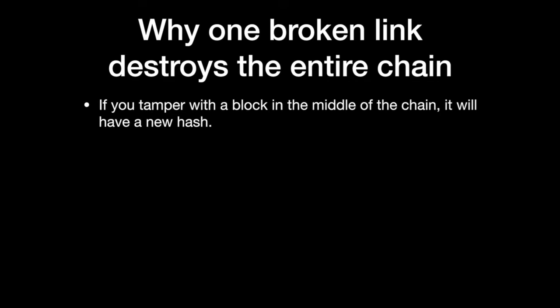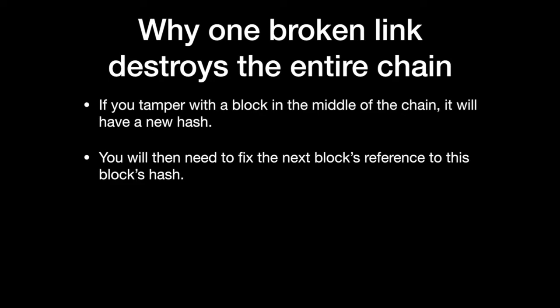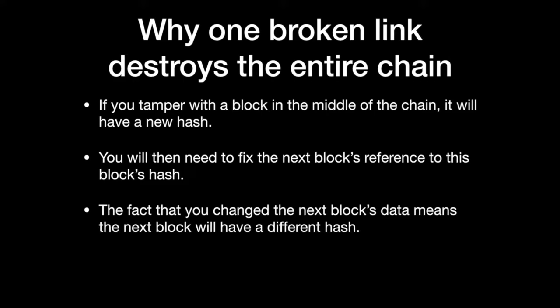So how does blockchain work like a chain? Say a hacker tampers with a block, called block A, which is in the middle of the chain. This means the hacker changes the data stored in block A. When that data is changed, it causes block A's hash value to change. This means that block B, which is the block that follows block A, no longer has a hash code that refers correctly to block A. So in order to keep the blockchain a chain, the hacker must also fix the hash code that referred to block A in block B, so that it corresponds correctly to block A's new hash code.